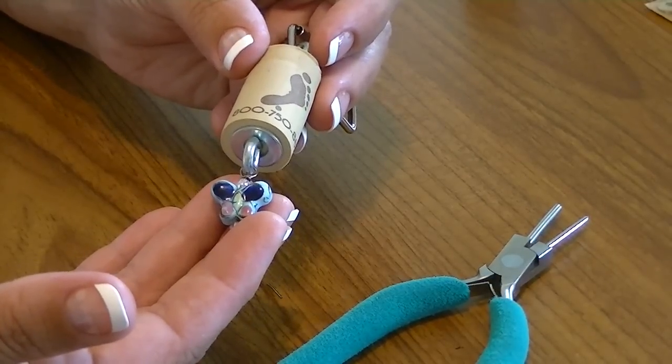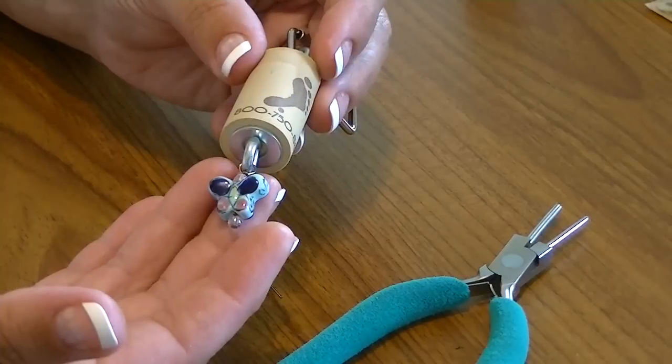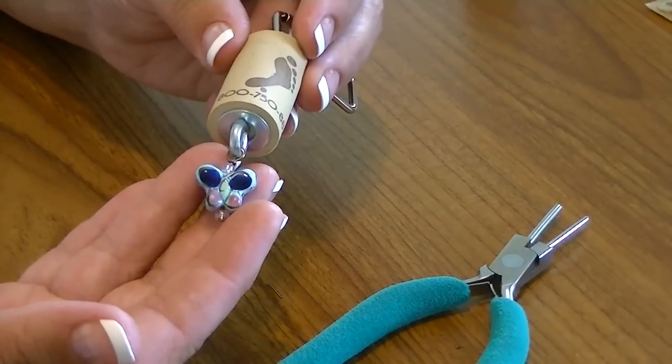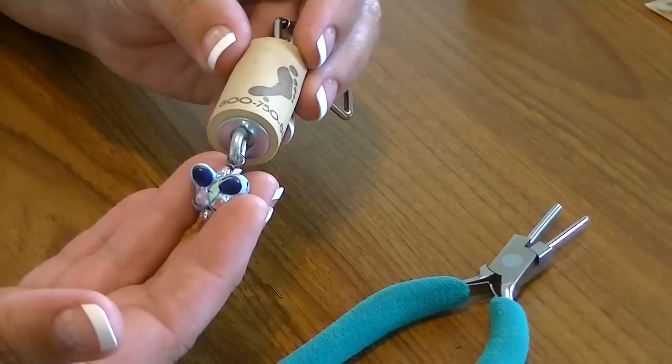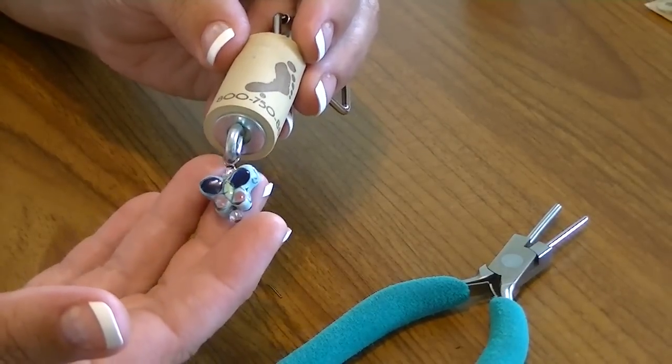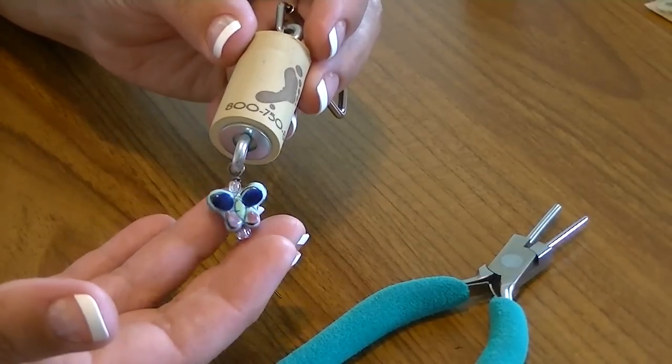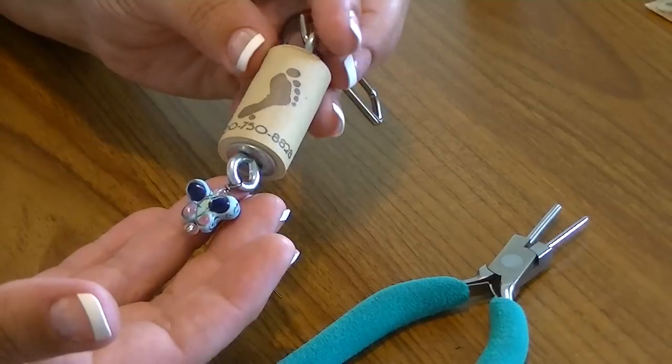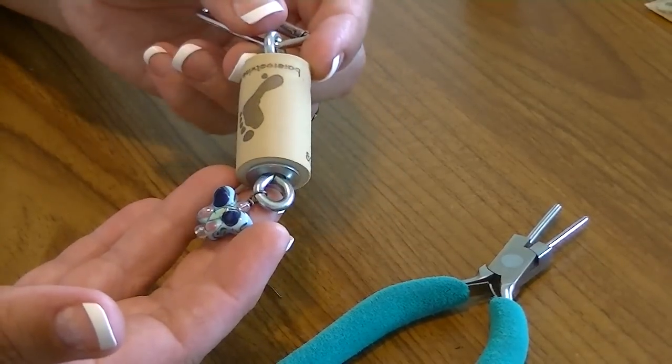Or if you're doing these as wedding favors, they're really quick and really simple. You could quickly personalize these with your initials dangling from there or the year that you were married or any of those other charms that say love or whatever. There's lots of fun ideas, so think about how you can use some of these corks and keep them from the landfill and make them into something useful.